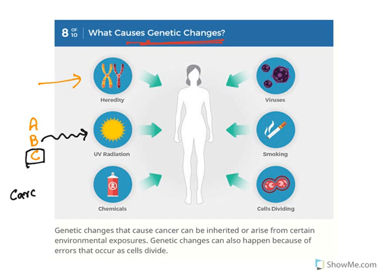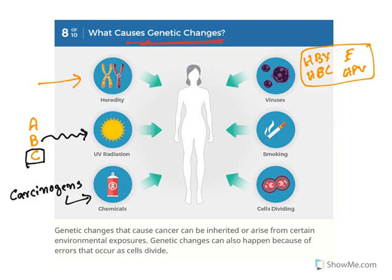Chemicals known as carcinogens — exposure to certain chemicals increases the chances of getting cancer. Viruses such as Hepatitis B virus, Hepatitis C virus, Epstein-Barr virus, and Human Papilloma Virus may also cause cancer by attacking cells and changing the genetic makeup of the cell. Smoking is one of the major reasons for cancer — smoke releases poly aromatic hydrocarbons, which cause DNA changes and continuous cell division.